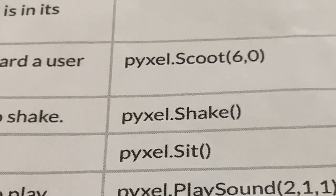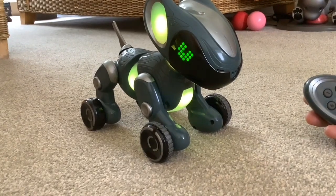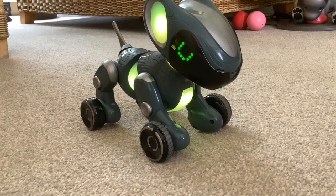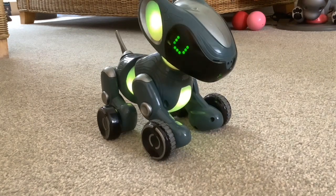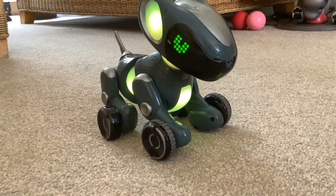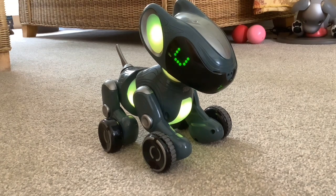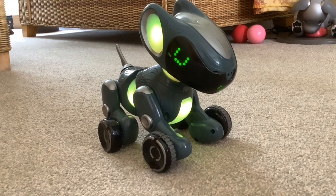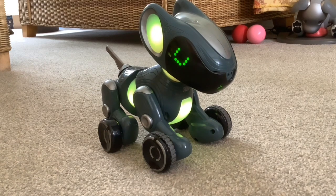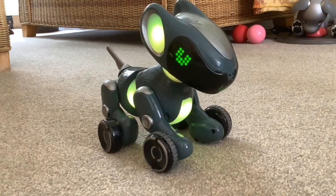The next one is shake — sits and raises paw to shake. The Python code is pixel.shake with just empty brackets, because there's no variation on the shake. That's activated by five. He's not lifting his leg up properly, and that's because when we first got him there was a slip of paper showing how to calibrate the shake. So that's something we'll have to do in a future video. But the code worked — the mechanics are just not set up right.